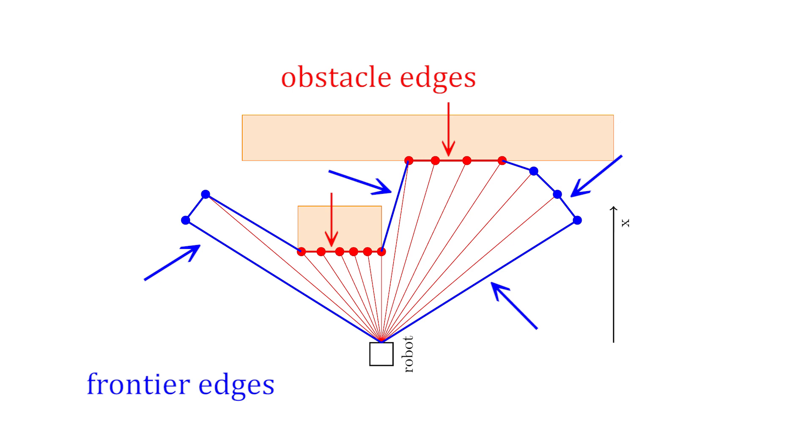Frontier edges are called frontier edges because they represent the frontier between known free space and unknown space. An unknown environment is fully explored once the known free space is bounded only by obstacles. In other words, exploration is complete once no frontiers are left.